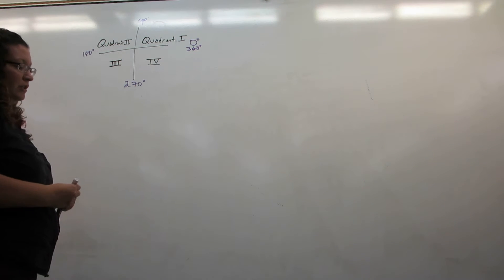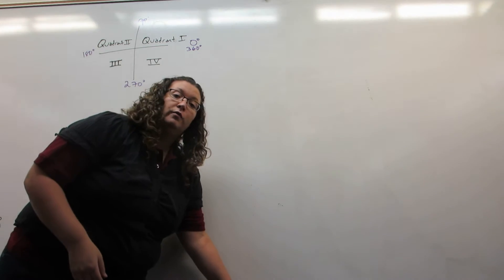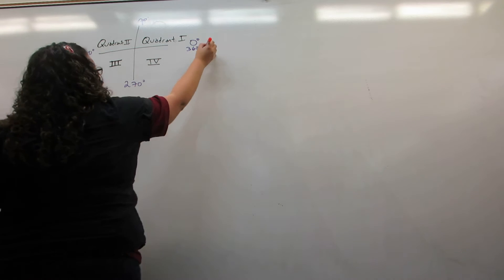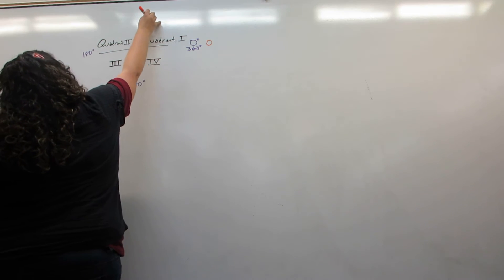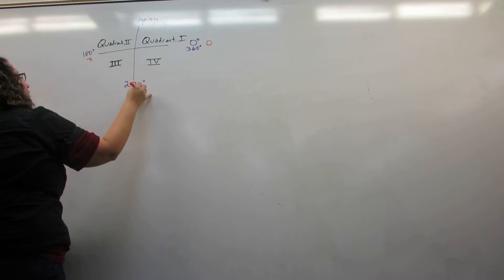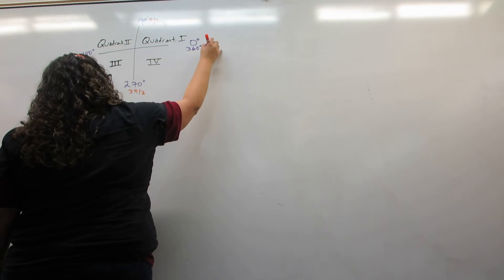Zero and 360 degrees are of course co-terminal angles, and sometimes we prefer one over the other. Now for radians, we start at zero, pi over two, pi, three pi over two, and two pi.